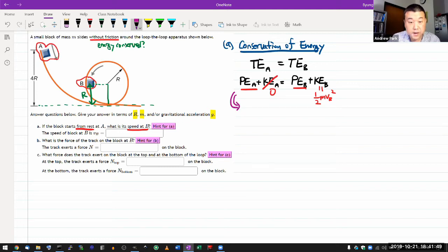So potential energy at point A, that's just the mgh, the gravitational potential energy. Or in terms of the quantities given, it's mg times 4R. That's equal to potential energy at point B, mg times R. That's the height where it's at, mg times R. Plus the kinetic energy, one half m VB squared.